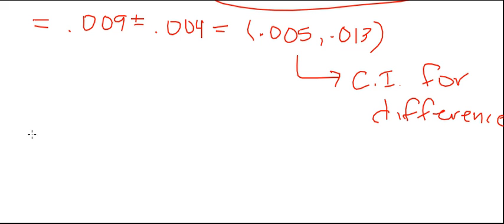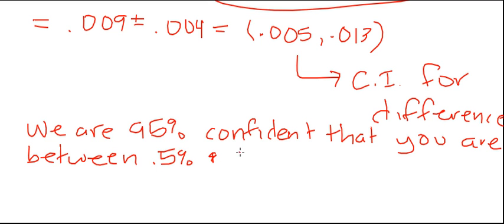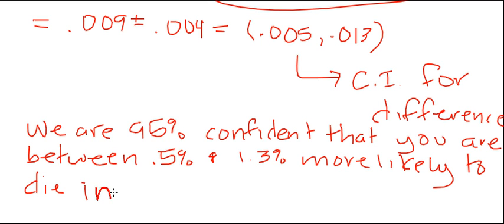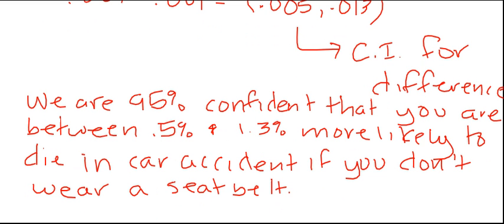Okay, so let's go ahead and interpret that. I'm going to say we are 95% confident that you are between, I'm just going to make these percentages, it's slightly easier. If you're 0.5% and 1.3% more likely to die, it's kind of a morbid example, to die in a car accident.